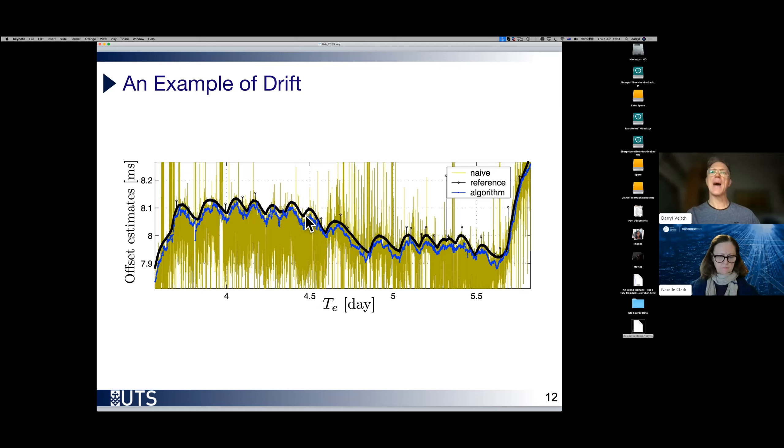And you can see that the blue does a pretty good job of cutting out the noise from the green and approaching the true underlying drift that's occurring. And you notice the gap between the blue line and the black line by a roughly constant amount. That's actually due to asymmetry. That's an asymmetry issue, not the actual clock synchronization issue.